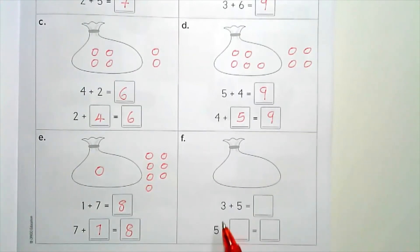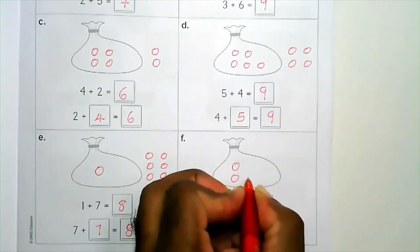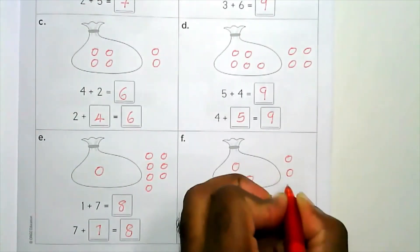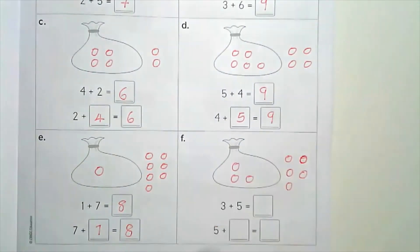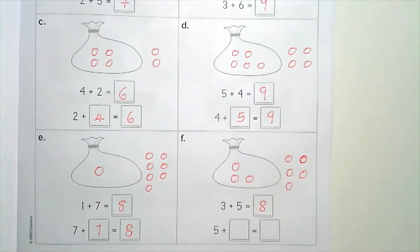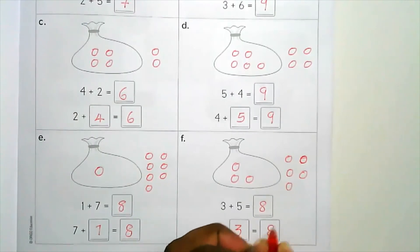Part F: we have three and five. Draw three inside and five on the outside. Count on starting from the bigger number: five, six, seven, eight. We write eight. Five plus three equals eight.